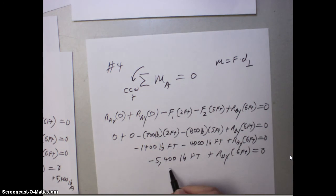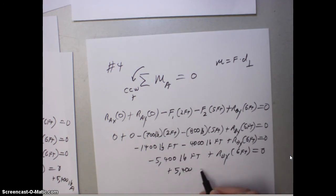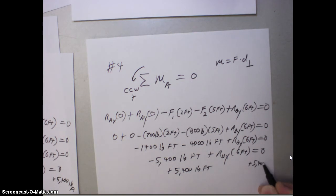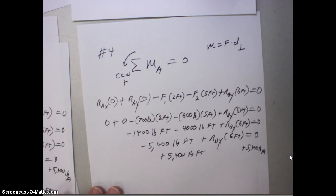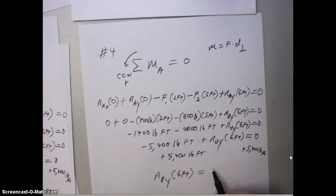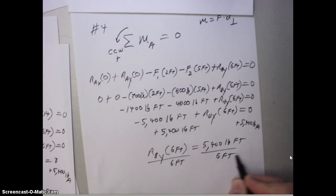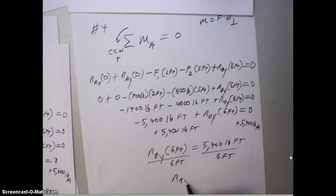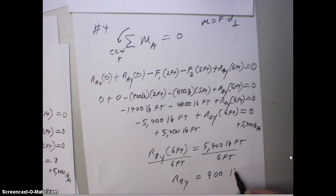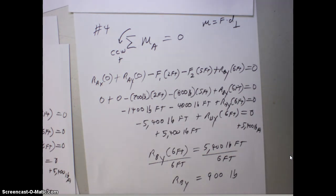Now, let's add 5,400 pounds feet to both sides. And we end up with RBY times 6 feet equal to a positive 5,400 pounds feet. Divide both sides by 6 feet, and we get RBY equal to 900 pounds. And that was step 4.